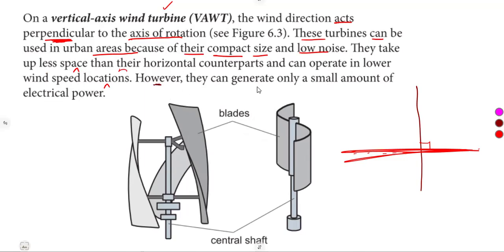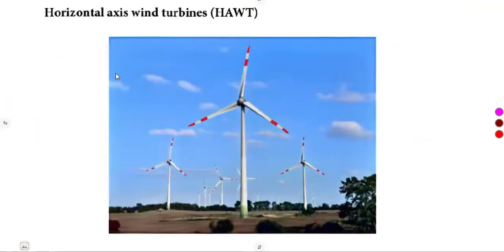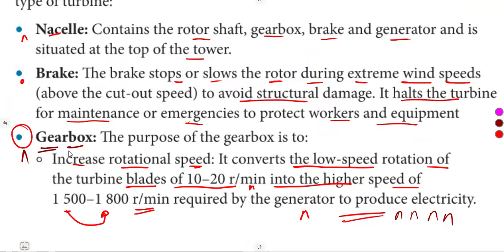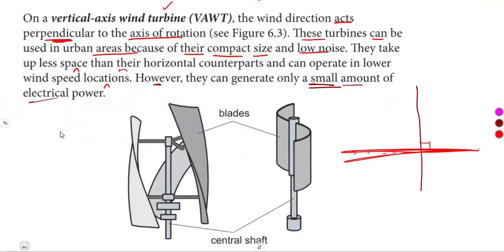However, vertical axis wind turbines can generate only small amounts of electrical power, which is a disadvantage. When dealing with horizontal axis wind turbines, the output is more because of the gearbox concept, which increases the rotational speed. So horizontal turbines have an advantage in terms of output compared to vertical axis turbines, which produce only a small amount of electrical power.